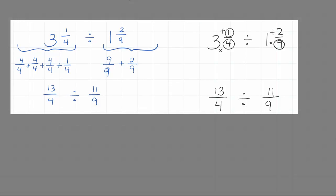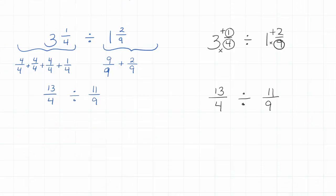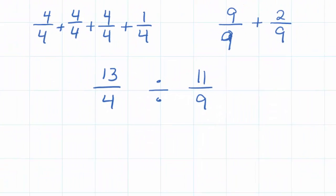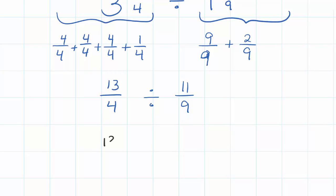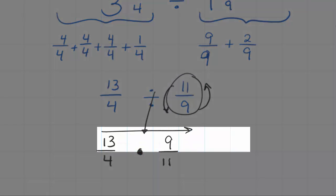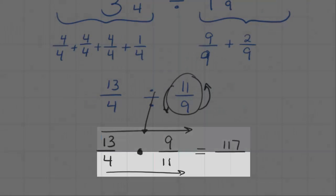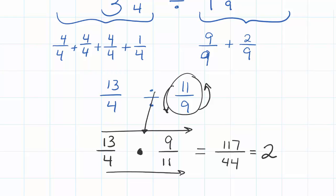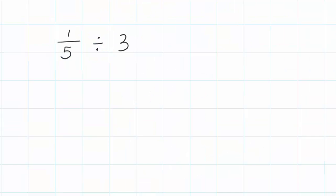Now let's use our knowledge of reciprocals to get an answer. I keep the first fraction exactly the same — thirteen-fourths — change division to multiplication, and take the reciprocal of eleven-ninths, so nine becomes my numerator and eleven becomes my denominator. Nothing reduces — 9 and 11 can't reduce, 13 and 4 can't reduce, and nothing diagonally reduces either. Multiplying top times top gives 117, and bottom times bottom gives 44. Since 44 goes into 117 twice with 29 left over, the answer is two and twenty-nine forty-fourths.